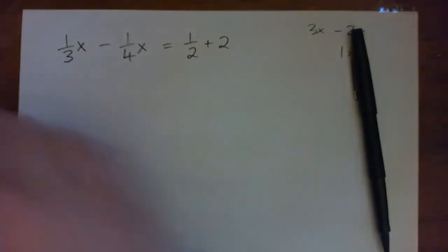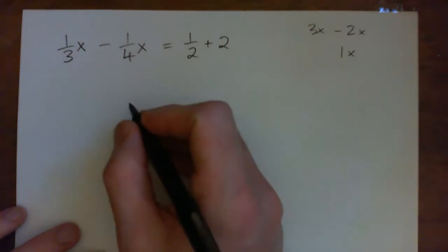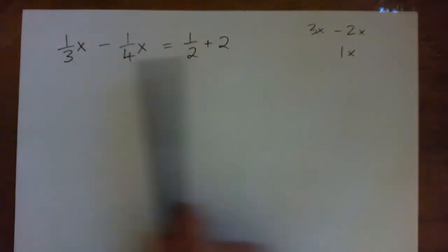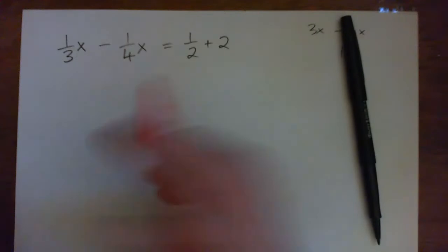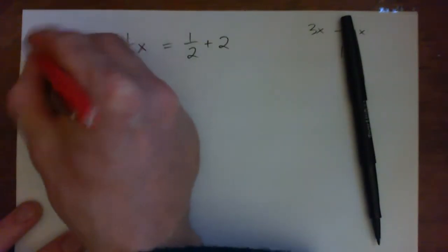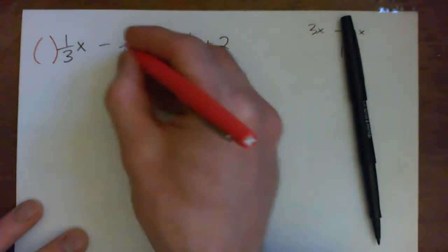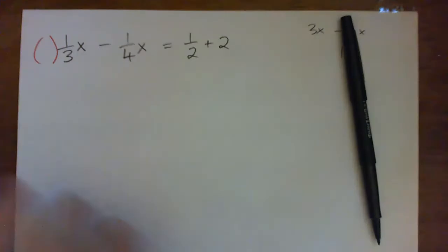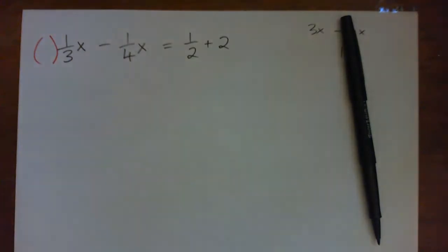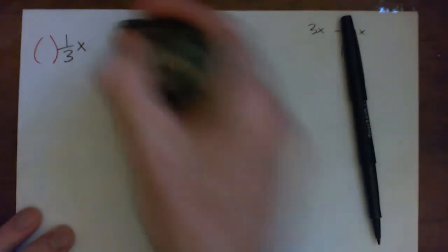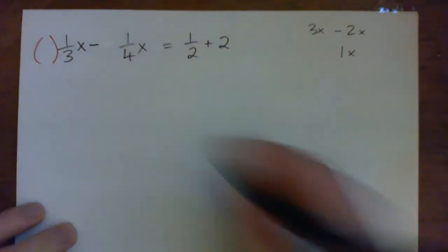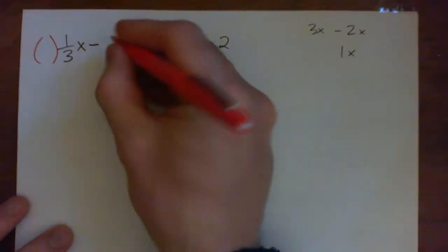What we could do is make the bottoms the same because we're subtracting fractions, so we could find a common denominator. To make the bottoms the same, a common multiple of three and four is twelve.